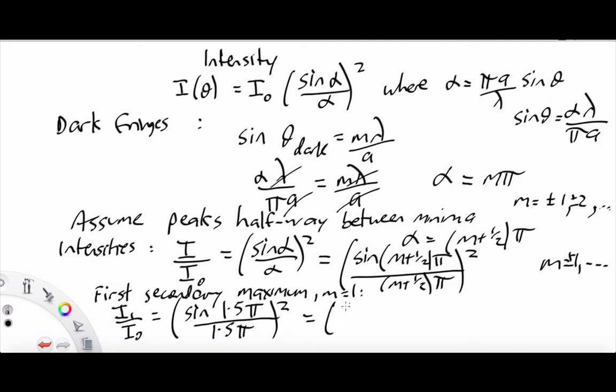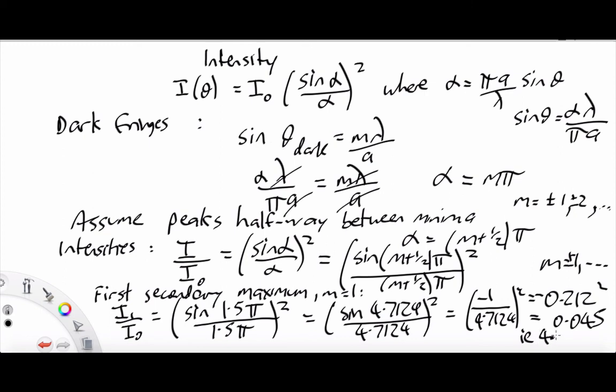Now, put your calculator to radians at this point, and you get sin of 4.7124 over 4.7124 squared equals minus 0.212 squared equals 0.045. In other words, 4.5% of the peak intensity of the central fringe.